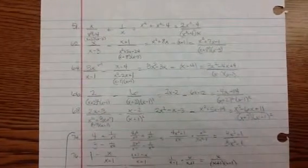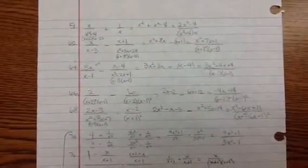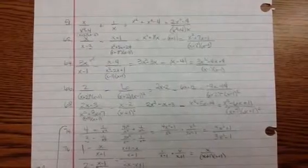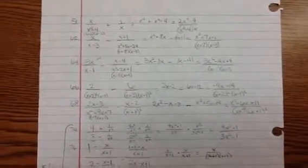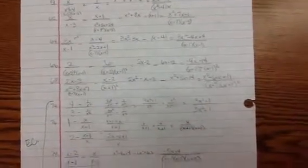Number 66, negative 4x minus 14 over x plus 2 quantity squared and x minus 1 quantity squared. Number 68, I got x squared minus 6x plus 11 over x plus 7 and x plus 1 quantity squared.